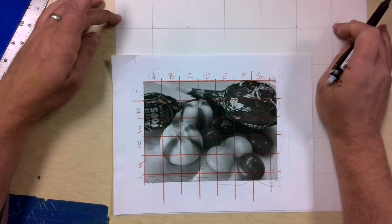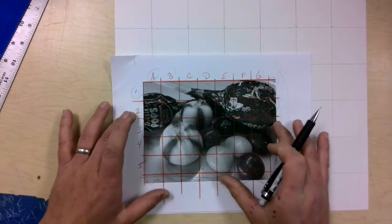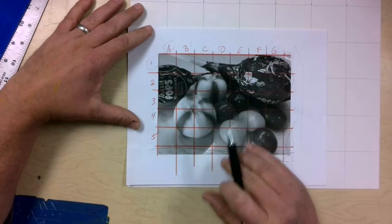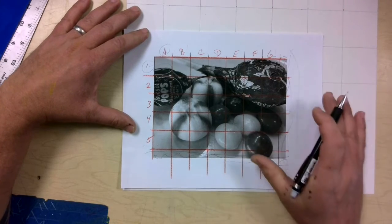So the reason I did a two by two is because I want to make this picture larger. Now working from a grid is going to be a lot easier and quicker to make this drawing.